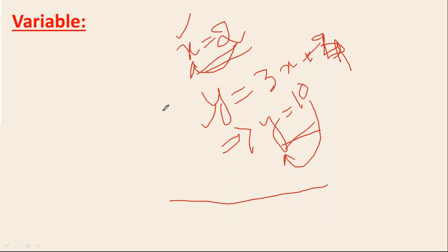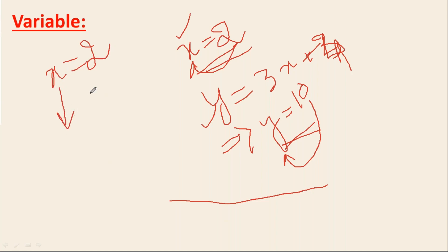X and Y are variables — same meaning as in mathematics. But in mathematics you are simply assigning 2 to X on paper. In Python, whenever you define X equals 2, Python will assign some memory location for X, the value will be stored there, and whenever you want to access this value, you use X.